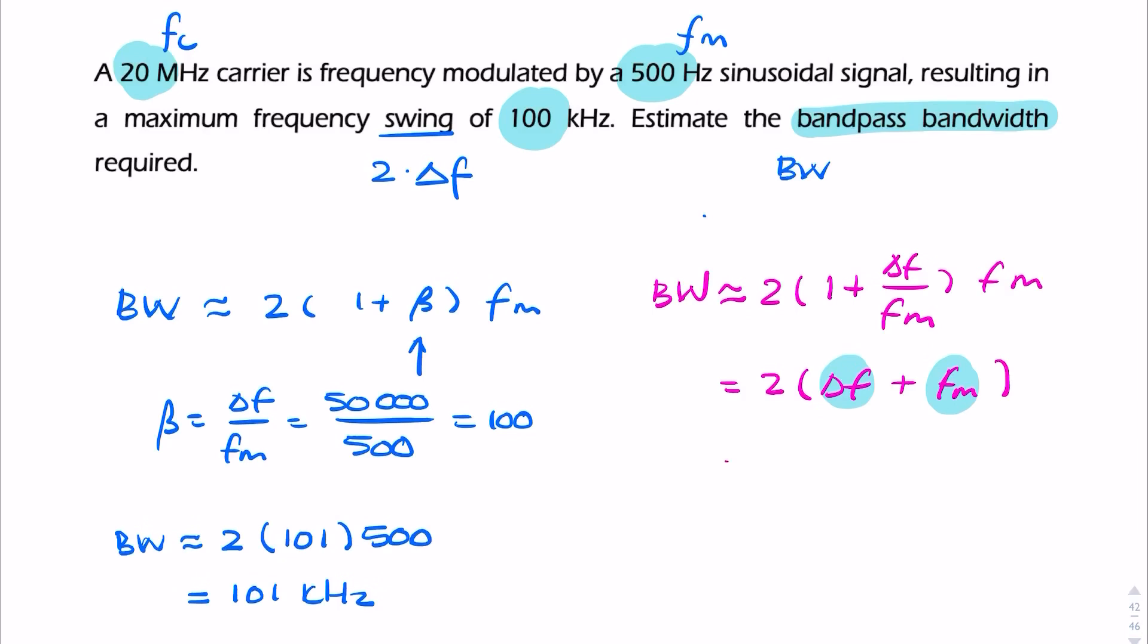So that's an easier way of calculating the bandwidth. It's simply 2 times 50, which is half the 100, plus 0.5. So this is in kilohertz. So 50 plus 0.5, times 2, is 101 kilohertz.